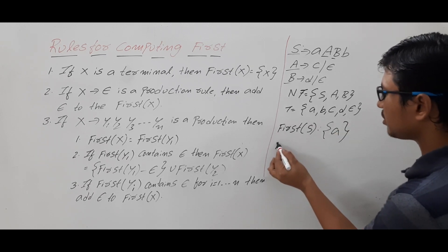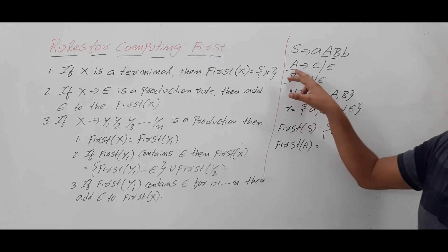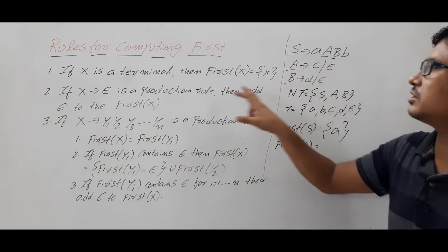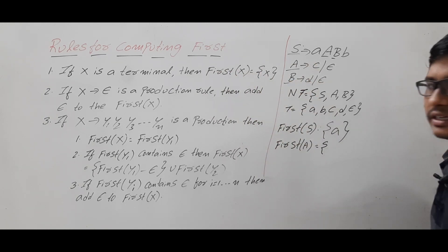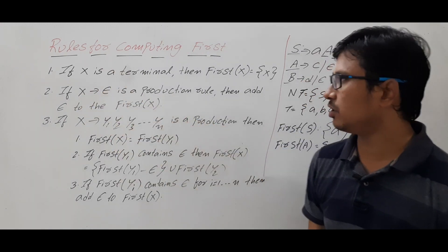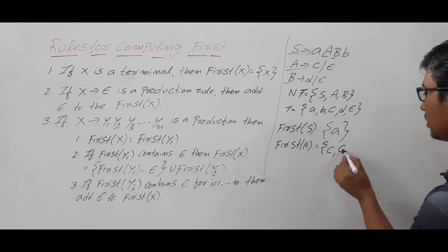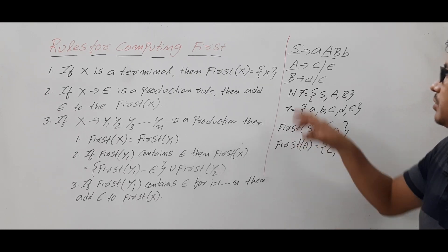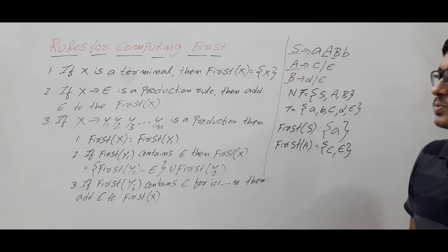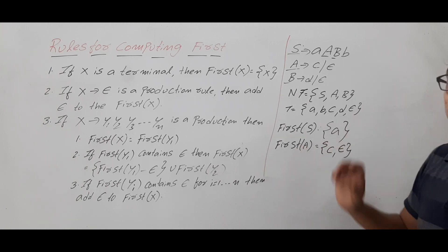Now FIRST(A): the production A → c is in the form X → Y1 ... Yn, so FIRST(A) = FIRST(c). Since c is a terminal, FIRST(c) = {c}. Also, A → ε is a production of the form X → ε, so we add ε to FIRST(A). Therefore FIRST(A) = {c, ε}.